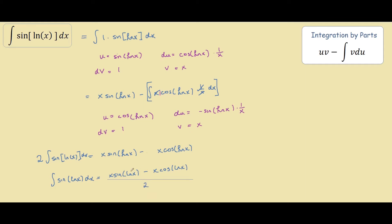You can choose to factor out the x over 2, so one last step would be x over 2 times sine of ln of x minus cosine of ln of x.